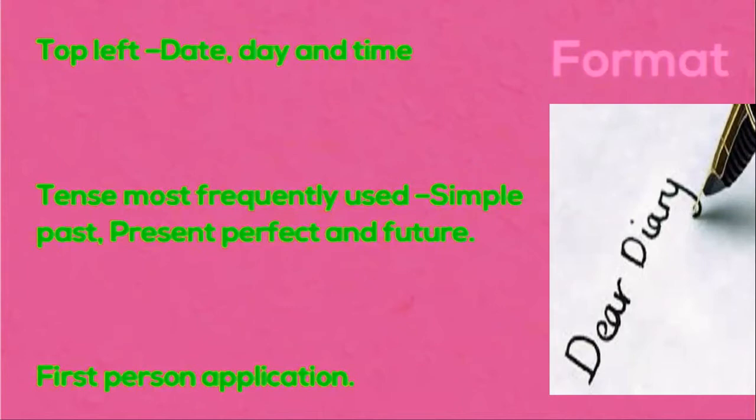Whenever you are writing, you have to always write it in first person narration. Basically, in your diary you are the center of that narrative — it's all about you. A lot of the time you will repeatedly use the pronoun 'I' and 'me,' and everything will be about you. Diary writing is all about you.